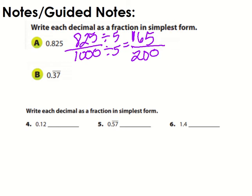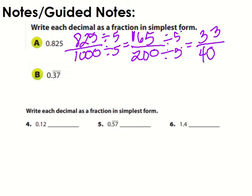We notice we can actually still divide by five again, so we're going to do it again because we have to get it to simplest form. 16 divided by 5: five goes into 16 three times with one left over, five into 15 gets three, and five into 20 gets four with nothing left over. Now they do not have anything in common — it's 33 over 200 — so that is your simplest form.